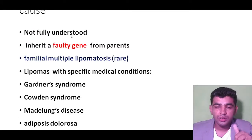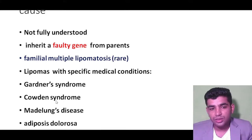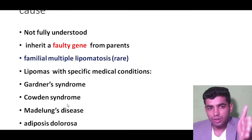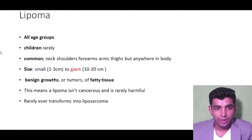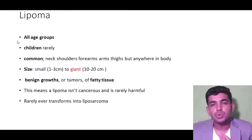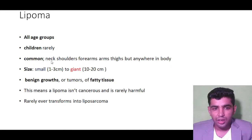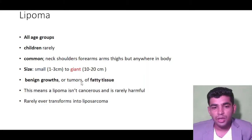The causes of lipoma are largely unknown, but some causes are inherited. The most important genetic syndrome is Gardner syndrome. Rarely, it can be associated with Madelung disease and Cowden syndrome. Lipoma can occur in all age groups, but is rare in children, and is commonly found on the neck, shoulder, arm, and thigh.